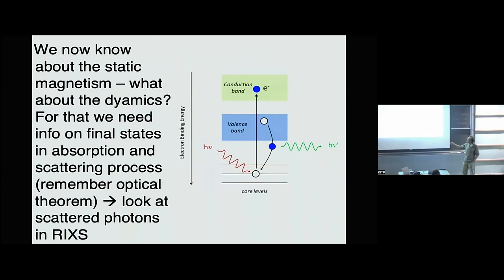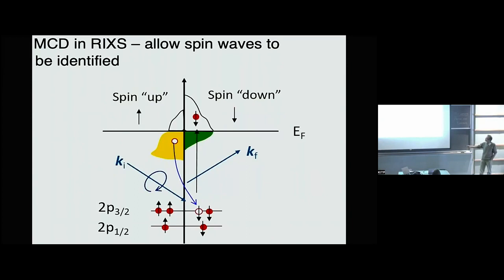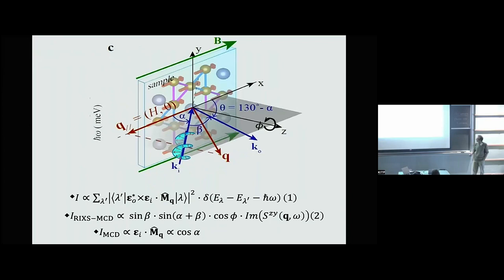In RIXS, you come in with a photon of momentum k_i — in absorption we integrated over everything that came out, but now we specify the final states and look at photons coming out with known energy, helicity, and momentum. There's a net momentum transfer. The inelastic scattering cross section at these resonances has a matrix element that goes like the cross product of the outgoing and incoming polarizations dotted into the magnetization fluctuation at that particular wavelength. I can look for energy-loss processes of different kinds — involving magnons, fluorescence, electron-hole pair excitations — if I know the final state.